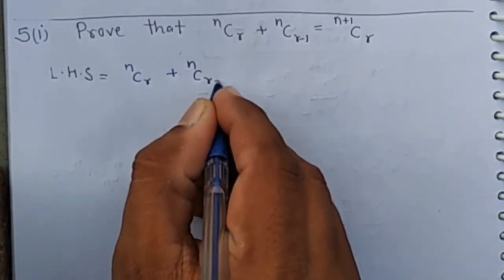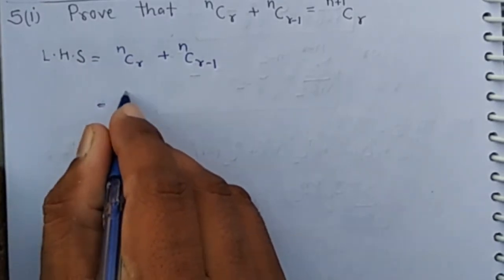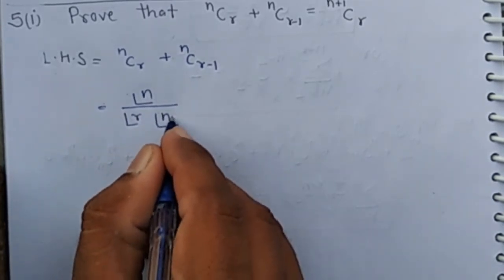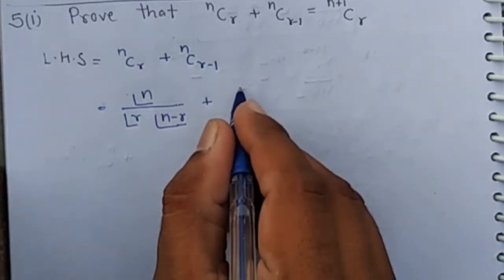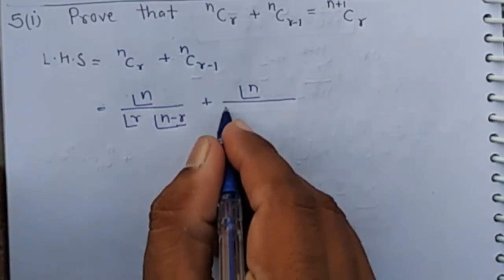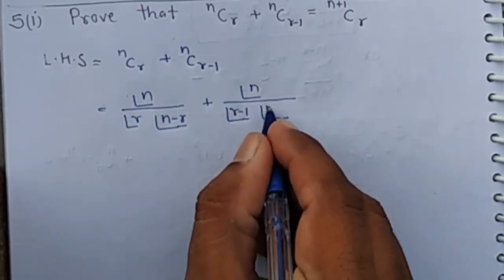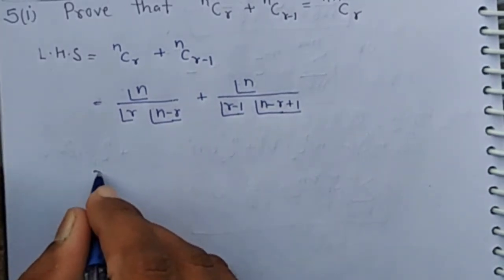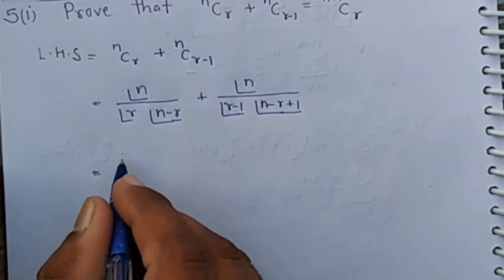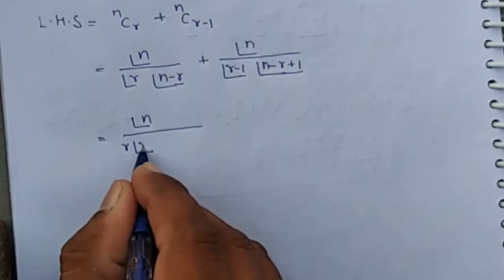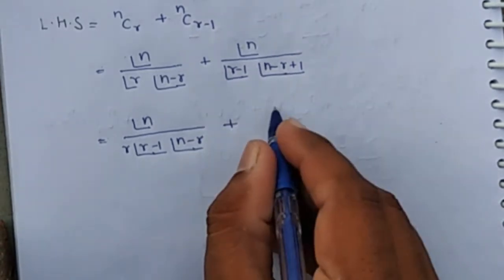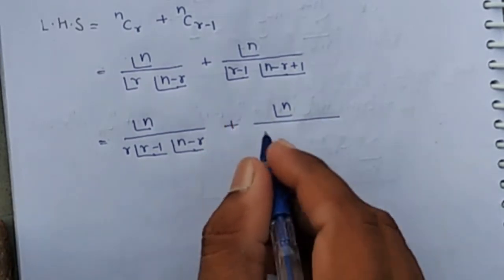nCr minus 1. We open the formula: factorial n over factorial r times factorial n minus r, plus factorial n over factorial r minus 1 times factorial n minus r plus 1. Factorial n over factorial r can be written as r times factorial r minus 1, times n minus r plus factorial n over factorial r minus 1.